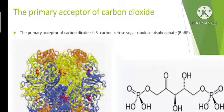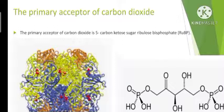Next, scientists set out to find which is the primary acceptor of carbon dioxide. It took a very long time. They did many experiments trying to find a 2-carbon compound, because they believed that since the first product was a C3 acid, the primary acceptor of CO2 would be a 2-carbon compound — since CO2 has 1 carbon, a 2-carbon compound combining with it would form a C3 acid.